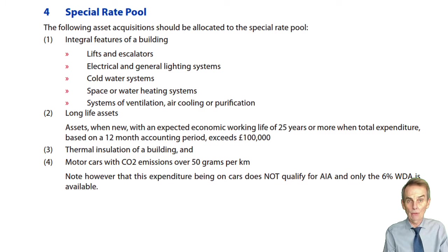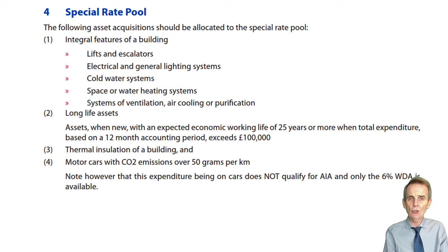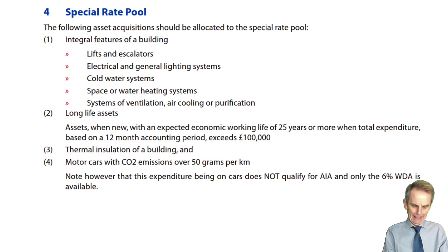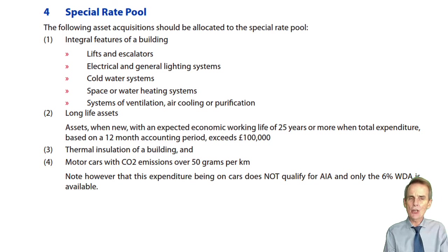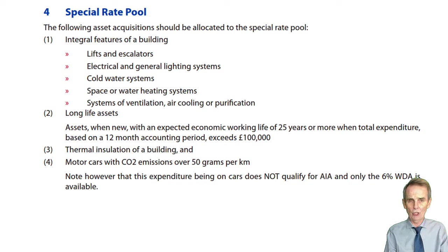At the end of last session, I left you to look through the expenditure in section four of this chapter — the list of expenditure that would be allocated to the special rate pool. Sadly, the word 'special' here is not really special when it comes to capital allowances, because it's special in a bad way: you don't get as much writing down allowance for special rate pool expenditure as you would with main pool expenditure. You're only getting 6% per annum rather than 18% per annum as you would in the main pool.